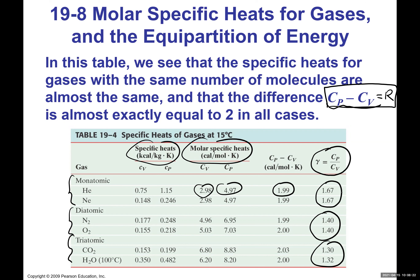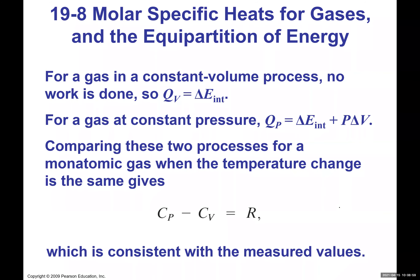Gamma is a dimensionless ratio of molar specific heats — we use the Greek letter gamma for it. For monatomic gases gamma = 1.67 and for diatomic gamma = 1.4. This ratio becomes useful when discussing certain types of processes. For a gas in a constant volume process, since it's isovolumetric, the work done is zero, so Q_v equals delta E_internal.